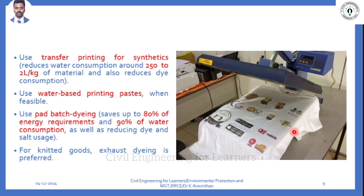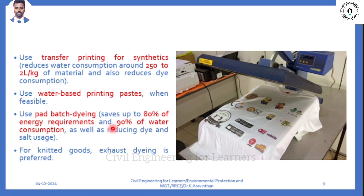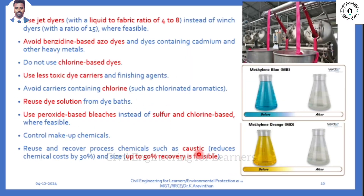A newer printing technology - seen in shopping malls where images are printed on t-shirts or cups - has less water consumption. This technology is called pad-batch dyeing, a water-based printing process. Changing to this printing technology reduces water use from 250 liters down to just 2 liters per kg of material. It saves 80 percent of energy requirement and 90 percent of water consumption. When making dyes, you should use batch dyeing process instead of synthetic dyes.